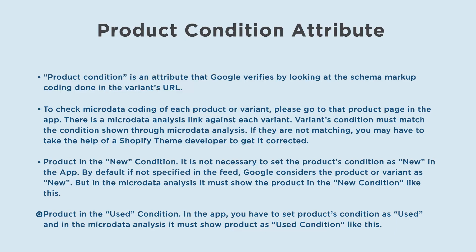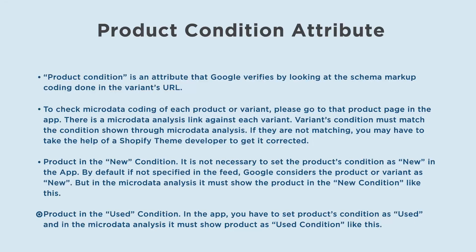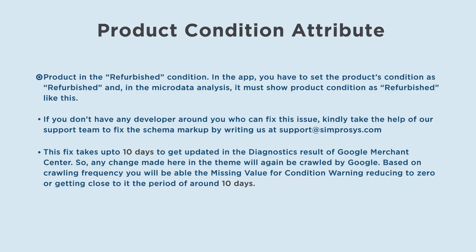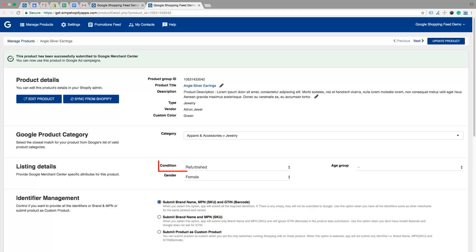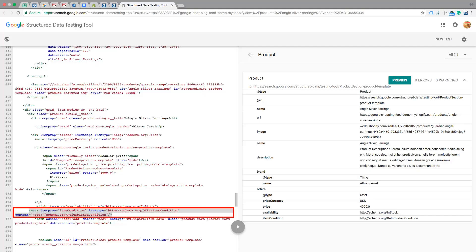Product in used condition: in the app, you have to set the product's condition as used, and in the Microdata Analysis, it must show the product as used condition like this. Product in refurbished condition: in the app, you have to set the product's condition as refurbished, and in the Microdata Analysis, it must show the product condition as refurbished like this.